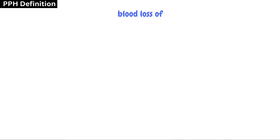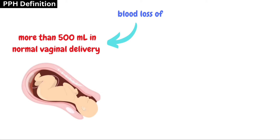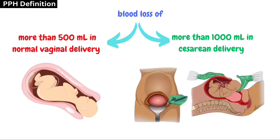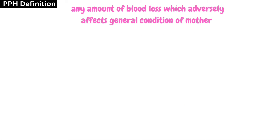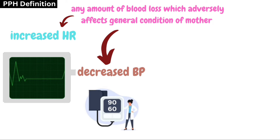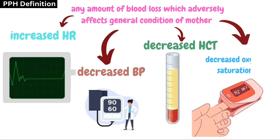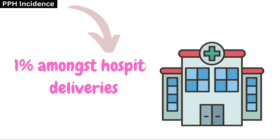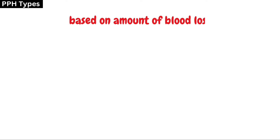PPH is defined as blood loss of more than 500 ml in vaginal delivery or more than 1000 ml in cesarean delivery. Clinically, any amount of blood loss which adversely affects the general condition of the mother — such as increased heart rate, decreased blood pressure, decreased hematocrit, and decreased saturation — is called PPH. The incidence of PPH is about one percent amongst hospital deliveries.